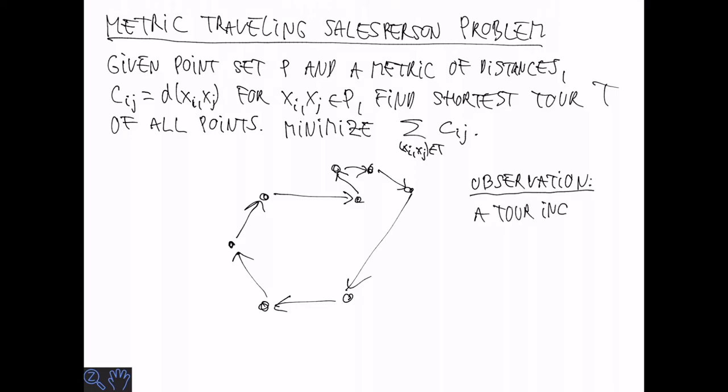So we want to minimize the sum of all the edges in the tour of cij. There are two observations we can make. First one is that a tour includes a spanning tree. So we can simply omit one edge from the tour. And we get a very special spanning tree. It's a path, in fact.